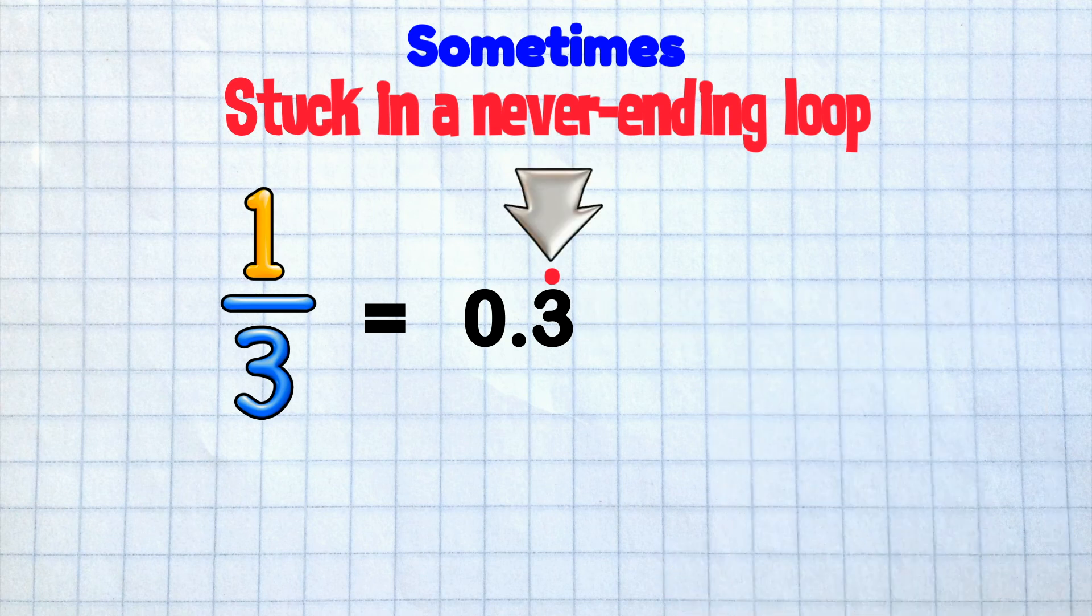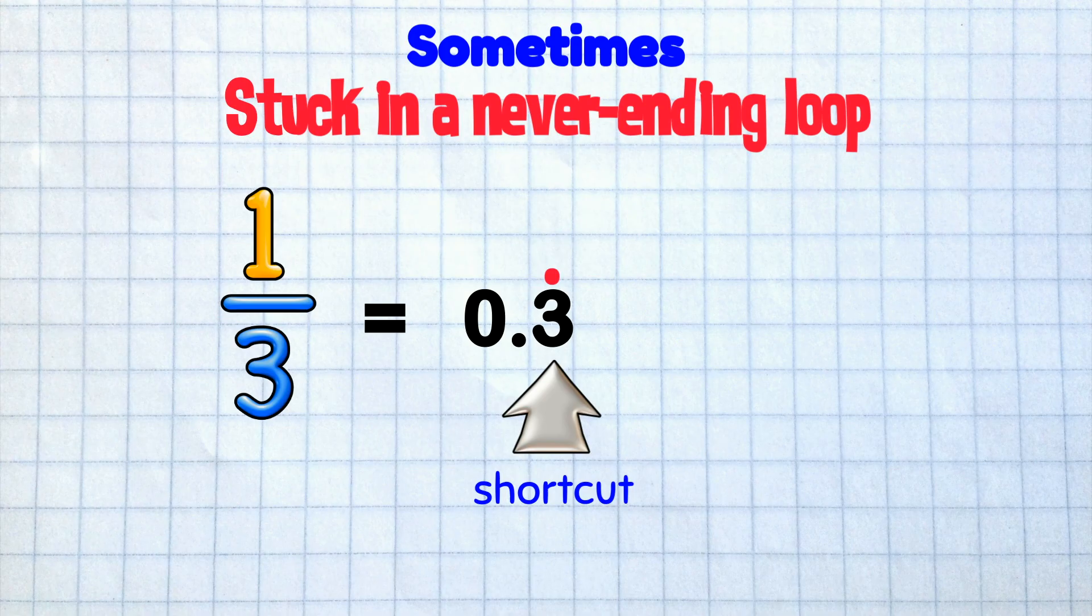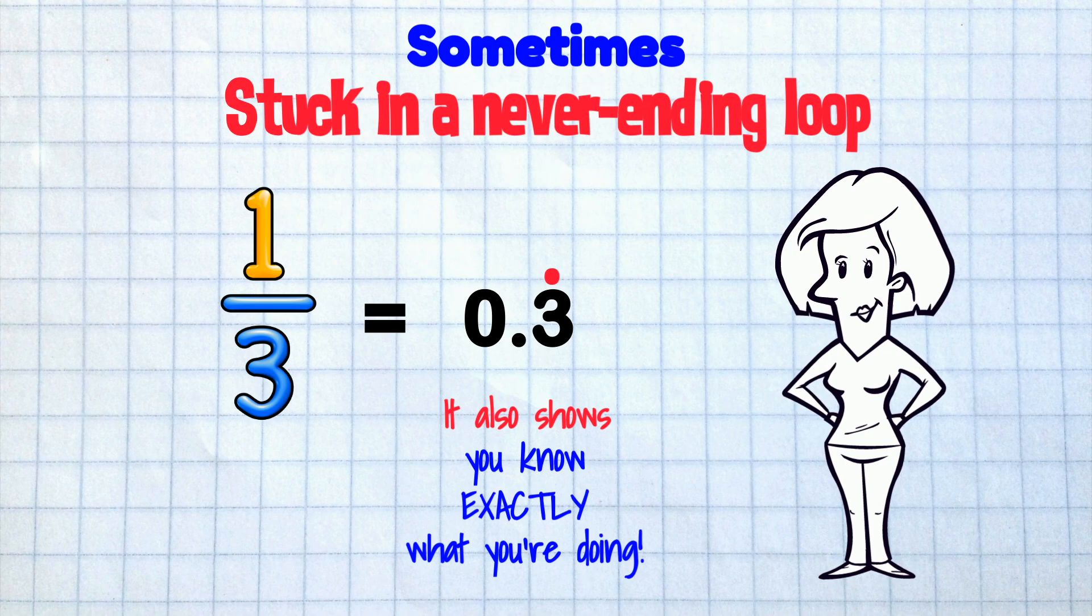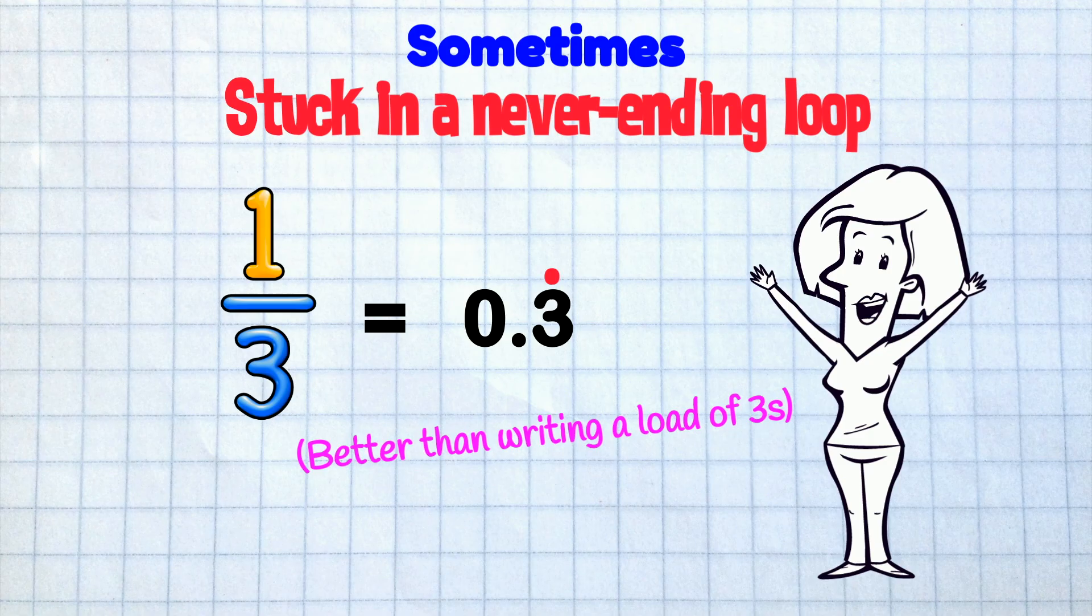The dot is a cool shortcut to show a recurring digit. It also shows you know exactly what you're doing, and it's way better than writing a load of 3's!